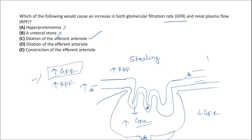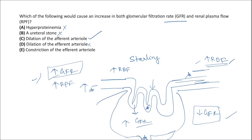Dilation of the efferent arteriole: although overall resistance decreases and renal blood flow increases, this dilation causes a decrease in hydrostatic pressure in the glomerular capillaries, which actually causes GFR to decrease. Filtration fraction would decrease and only renal blood flow would increase — also a wrong choice.